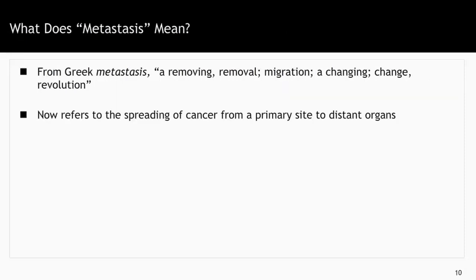An important word in cancer is metastasis — the spreading of cancer from a primary site to distant organs. It literally comes from the Greek word metastasis, meaning removing, removal, migration, a changing, or revolution. Metastasis, which means the spread of cancer from primary sites to distant organs, is an important word to learn early in the study of cancer.